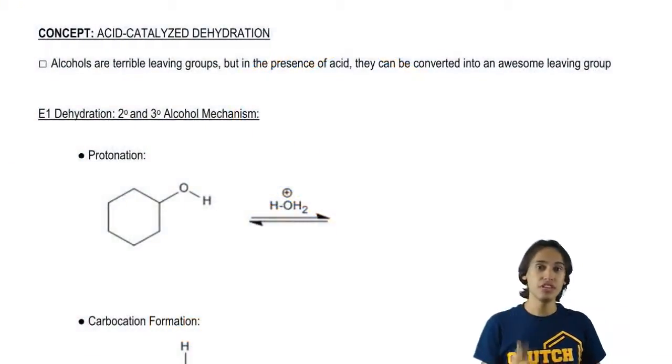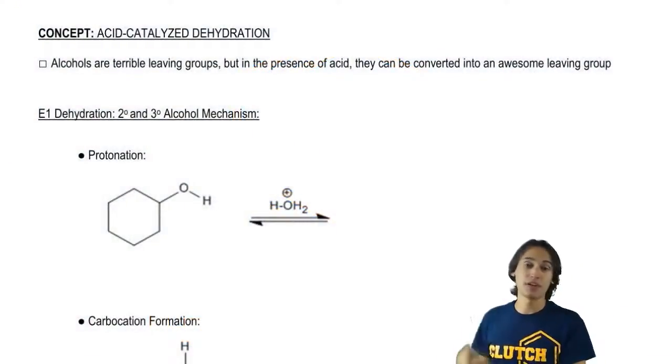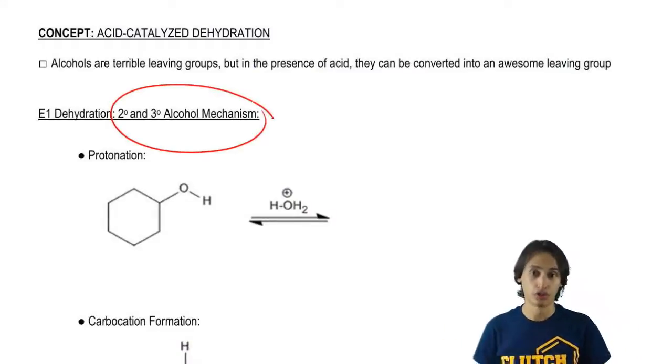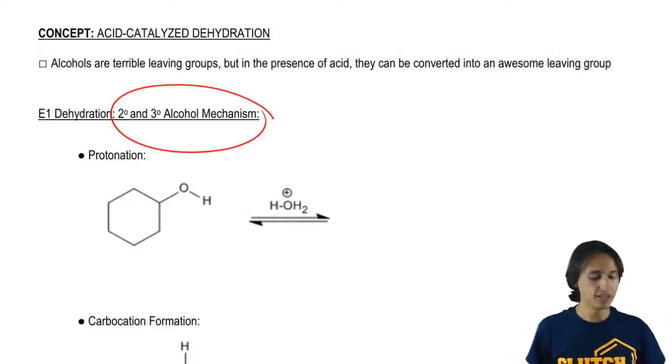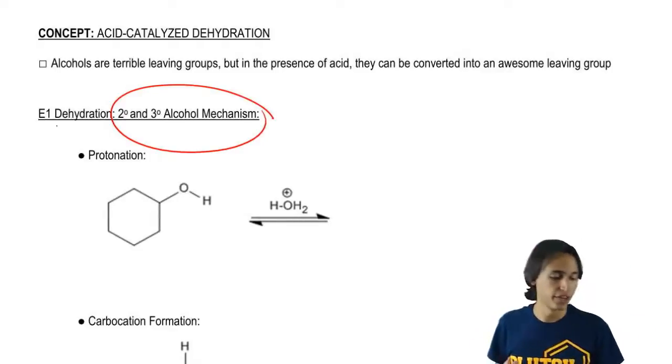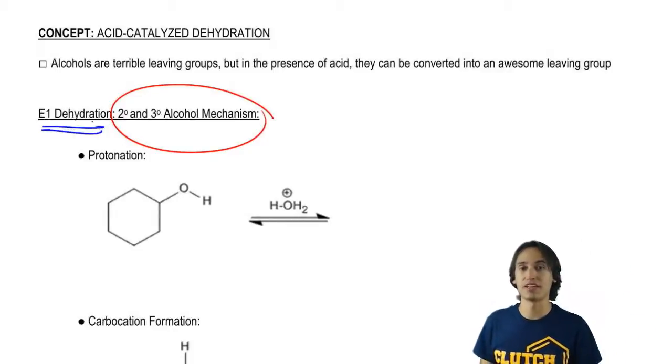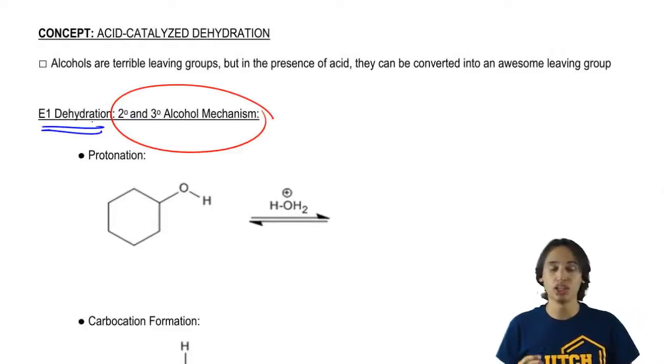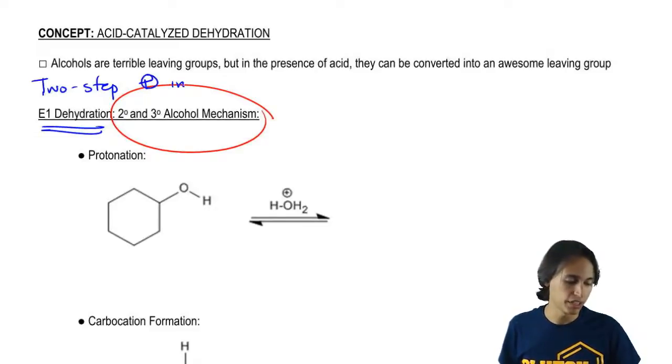So let's go ahead and get started. This mechanism that I'm going to show you right now only applies to secondary and tertiary alcohols and these are going to follow the E1 dehydration mechanism, meaning that if you remember back to E1, E1 is actually going to be a two-step reaction and it's going to involve a carbocation intermediate.